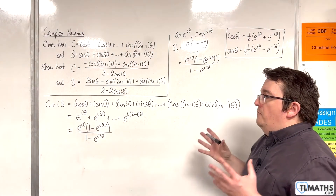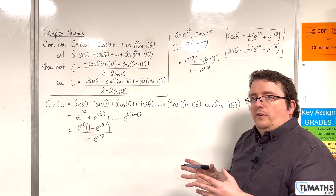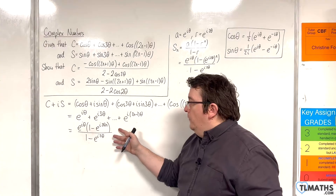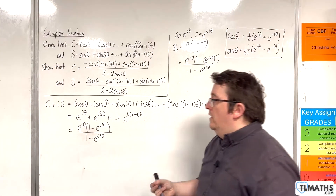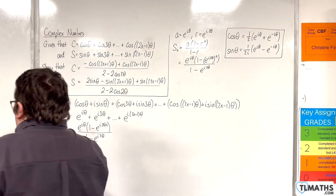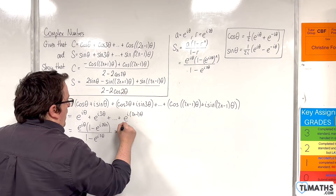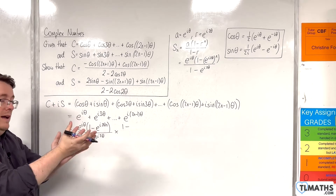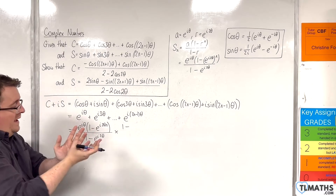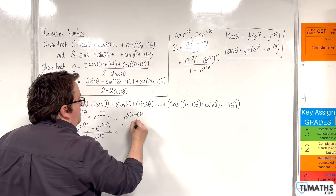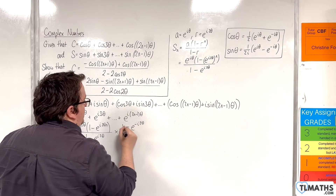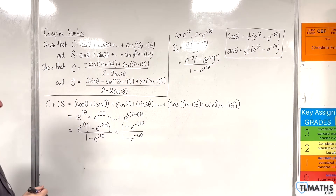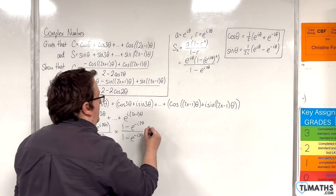To move on from there, we want to rationalise the denominator. We multiply top and bottom by the complex conjugate of the denominator. The sign of the imaginary part must change, so the conjugate is (1 − e^(−i2θ)). That is what we multiply top and bottom by.